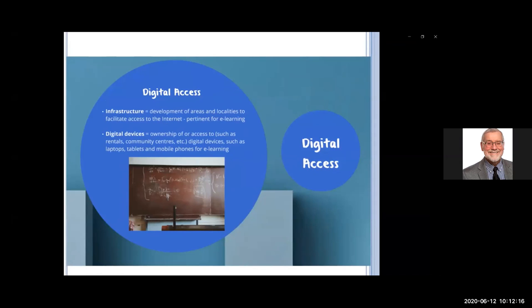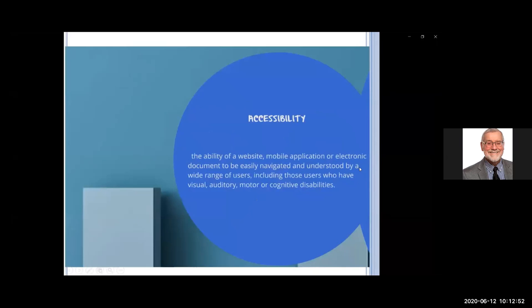To understand the digital divide, we need to distinguish between access and accessibility. Access refers to the ability to fully participate in the digital system — including tools such as the internet and computers, digital access infrastructure that facilitates connectivity in areas and localities, and access to digital devices such as laptops, tablets, and mobile phones through ownership, community centers, or rentals.